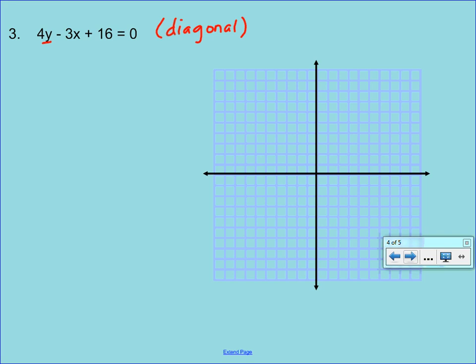So we have that y. If the y we're trying to get by itself, let's do that right away. Let's subtract that 4y from both sides, because now the y is away from everything else. So we're left with a negative 3x plus 16. That's equal to a negative 4y.